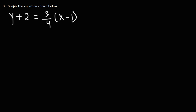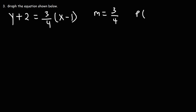The next thing we need to talk about is how to graph a linear equation in point-slope form. First, we identify the slope and the point. The slope is the number out in front — so our m value is 3 over 4, a rise of positive 3 and a run of 4. For the point: we see a negative 1 for x, so we change it to positive 1, and we see plus 2 next to y, so we change it to negative 2. Our x1 value is 1, our y1 value is negative 2.